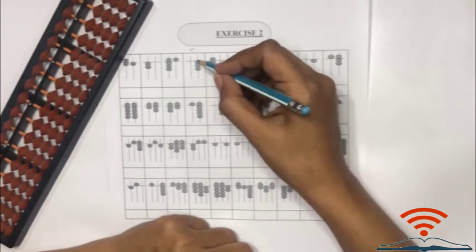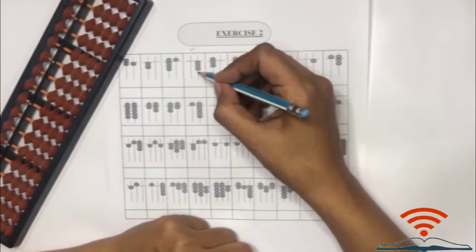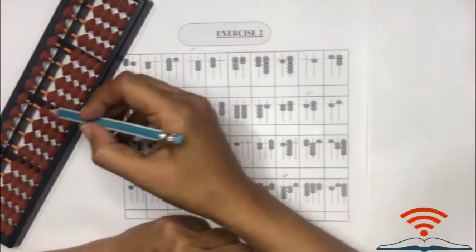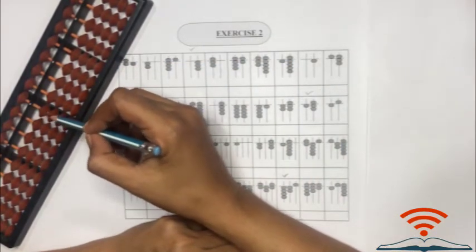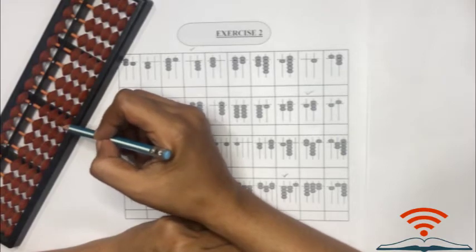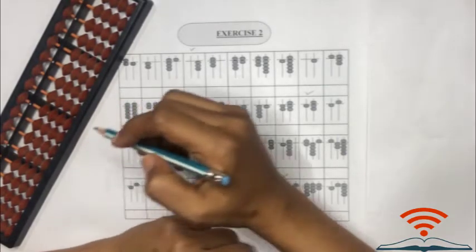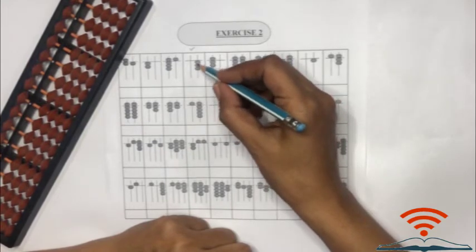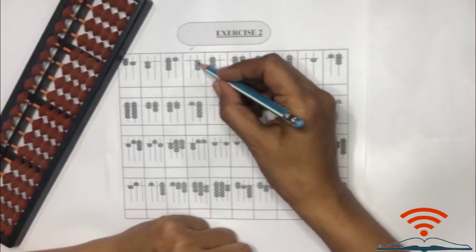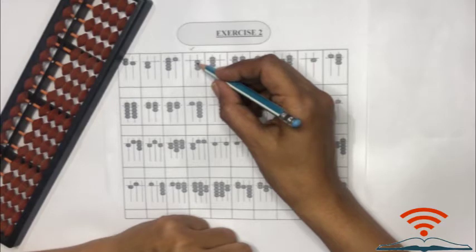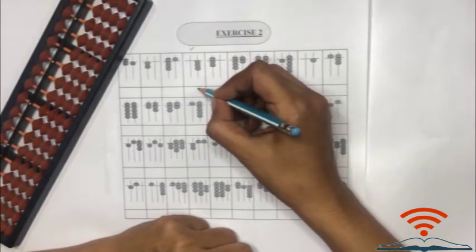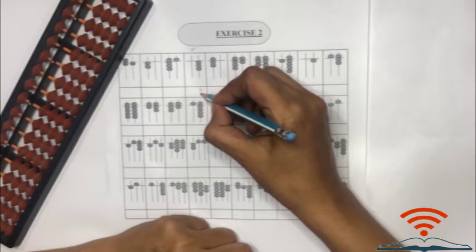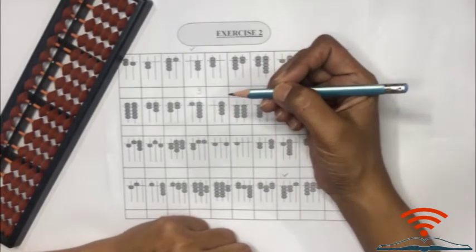We will take three examples then you can practice on worksheet by yourself. Here you can see three beads on one's rod. Remember beads below the beam represents one, two, three, four. How many beads towards the bar? Yes, one, two, three.